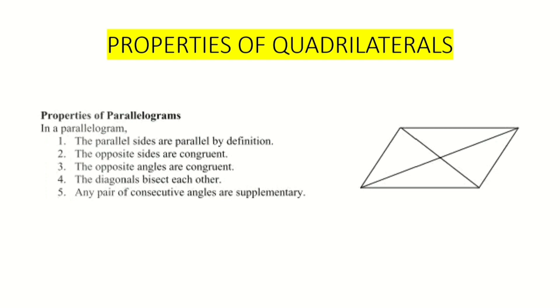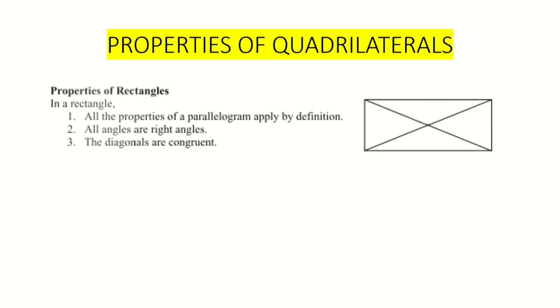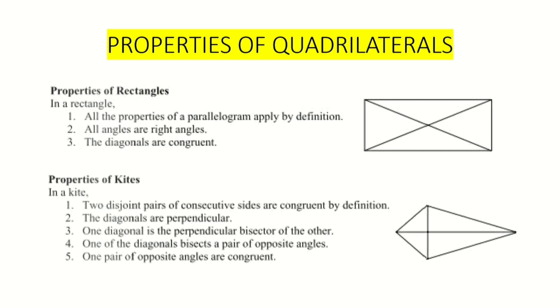Number five, any pair of consecutive angles are supplementary. Next, we also discuss the properties of a rectangle. In a rectangle, we have all the properties of a parallelogram applied by definition. Then we have these two unique properties of a rectangle: all angles are right angles, and diagonals are congruent.